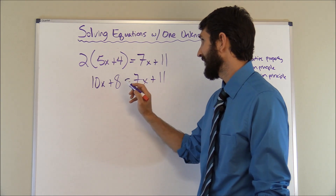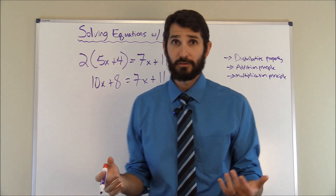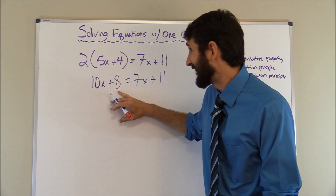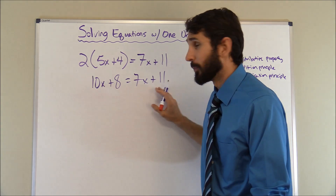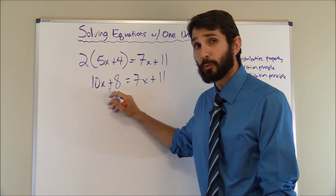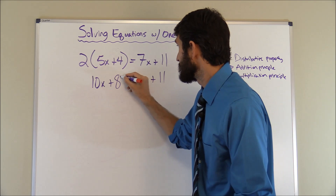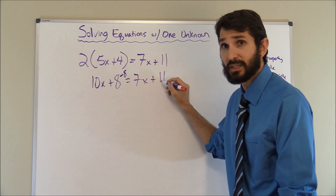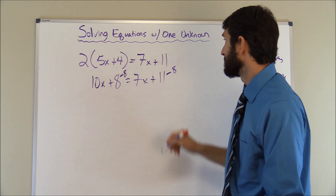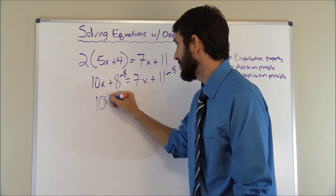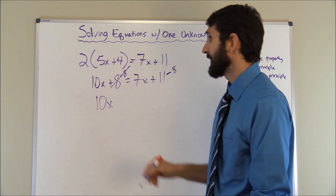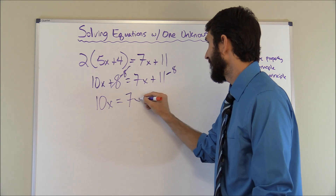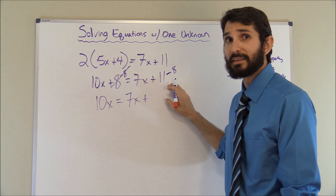Now we're going to attack the numbers using the addition principle, which states we can do the opposite of the number to get rid of it. It's a plus eight, so we subtract eight from this side — but we've got to do the same on the other side. So it's eleven minus eight. Carrying this down: ten X plus eight minus eight, those cancel out, equals seven X plus three, since eleven minus eight gives us three.